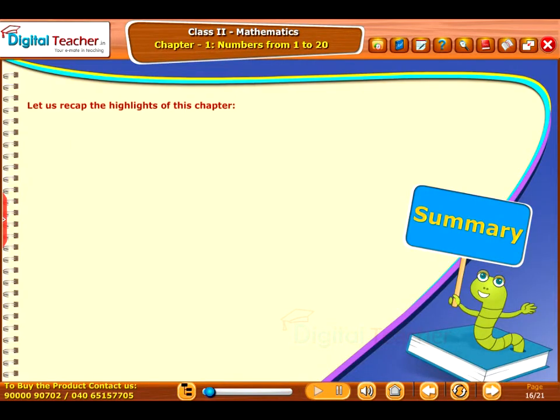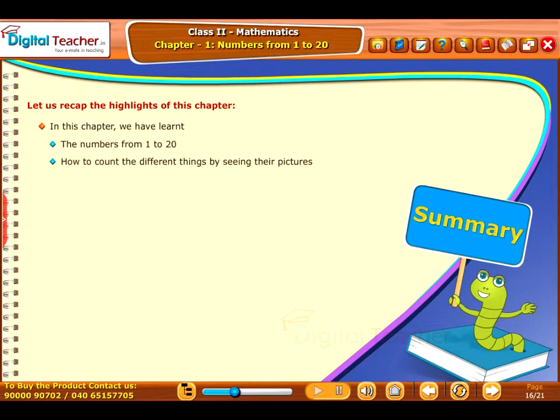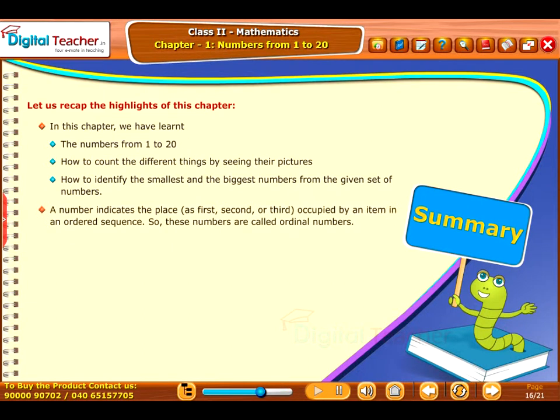Summary: Let us recap the highlights of this chapter. In this chapter, we have learned the numbers from 1 to 20, how to count the different things by seeing their pictures, how to identify the smallest and the biggest numbers from the given set of numbers. A number indicates the place as first, second or third occupied by an item in an ordered sequence. So, these numbers are called ordinal numbers.